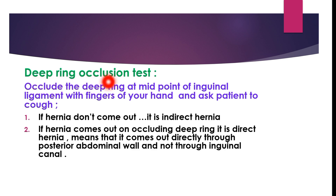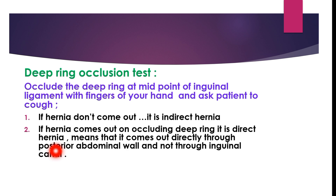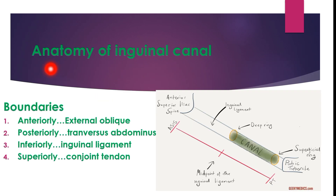To differentiate between direct and indirect hernia, we perform the deep ring occlusion test. This is done by occluding the deep ring at the midpoint of the inguinal ligament, between the anterior superior iliac spine and the pubic tubercle, with your finger, and asking the patient to cough. If the hernia does not come out on coughing when the deep ring is occluded, it is an indirect hernia. If the hernia does come out, it is a direct hernia, meaning it protrudes directly through the posterior abdominal wall and not through the inguinal canal.